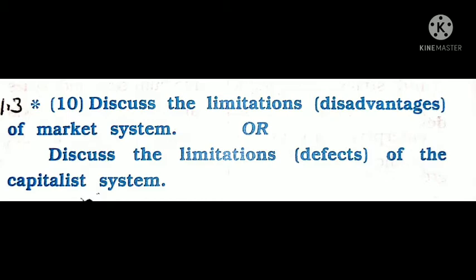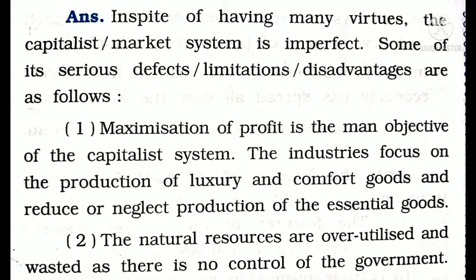The question is: discuss the limitation and disadvantage of the market system. The answer is: in spite of having many virtues, the capitalist market system is imperfect. Some of its serious defects, limitations, and disadvantages are as follows.